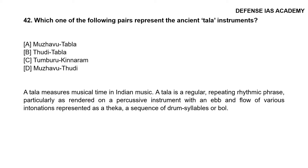Question 42: Which of the following pairs represent the ancient tala instruments? The correct option is option D, Ujavu Tudi. A tala measures musical time in Indian music. A tala is a regular repeating rhythmic phrase, particularly as rendered on a percussive instrument, with an ebb and flow of various intonations represented as a teka — a sequence of drum syllables or bowl.